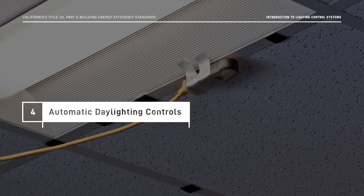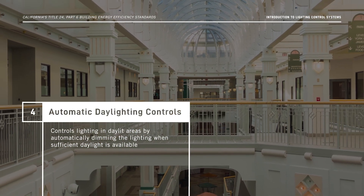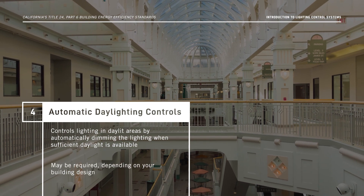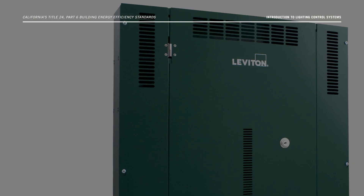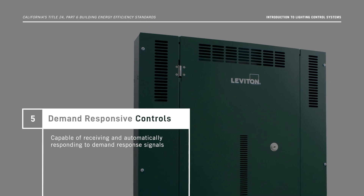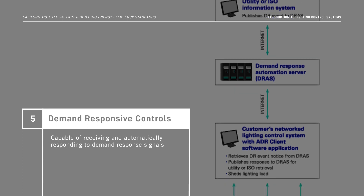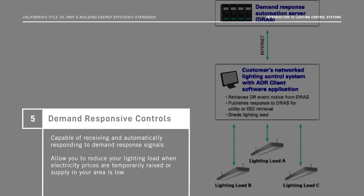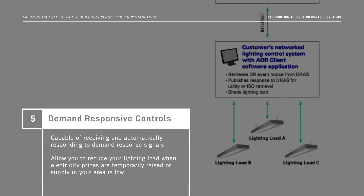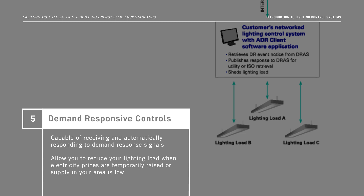Automatic daylighting controls form the fourth layer in a space. They control lighting in daylit areas by automatically dimming when sufficient daylight is available. They may be required, depending on your building design. The fifth and last control layer is demand-responsive controls. These controls are capable of receiving and automatically responding to a demand-response signal sent from a utility or third-party program implementer. They allow you to reduce your lighting load when electricity prices are temporarily raised, or the electricity supply in your area is critically low. These controls have to meet requirements in section 110.12.